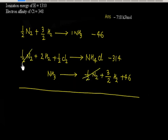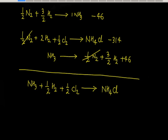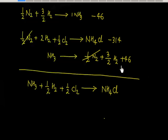When we add the two reactions, nitrogen cancels out. We are left with NH3 on one side, plus half H2 and half Cl2, giving NH4Cl on the other side. The delta H value is minus 314 plus 46, which equals minus 268 kJ per mole.